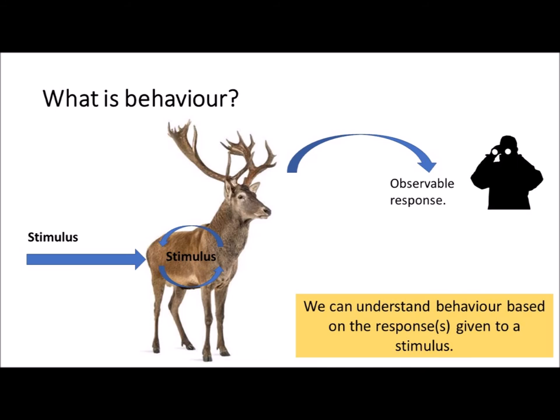Let's recap what I have explained in this video. Behaviour is the observable response to a stimulus. That stimulus can come from the external environment, and that external stimulus can cause a change in the animal's physiology. This can result in an internal stimulus which further directs behaviour. These observable responses allow us to understand behaviour based on the context within which it is performed. We have internal and external factors that are driving how animals perform particular behaviours, and they can also be within a particular seasonal or social context.